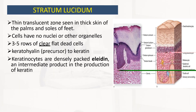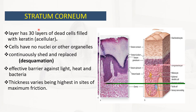In the stratum granulosum, keratohyalin granules accumulate and laminated granules are secreted into the intercellular spaces, forming glycolipid barriers that slow water loss in the epidermis. The stratum lucidum is a thin translucent zone seen only in thick skin of the palms and soles of the feet. Cells have no nuclei or other organelles; it has three to five rows of clear, flat, dead cells containing eleidin, a precursor to keratin.